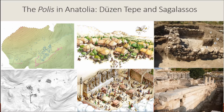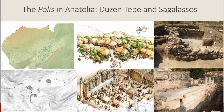Sagalassos developed into a more monumental center right at the time Jesentepe was abandoned, around the late third to early second century BCE. This transformation is an example of what in scholarly research is considered polis formation: the development of a new form of material culture, monumental architecture, social-political organization and institutions, territorial extension, and development of local elites.